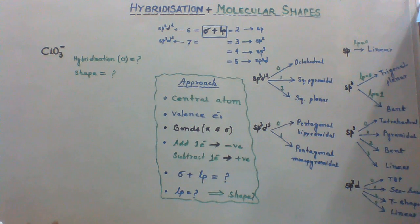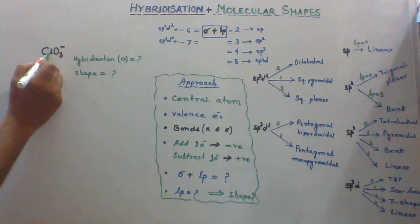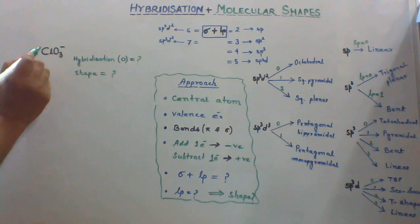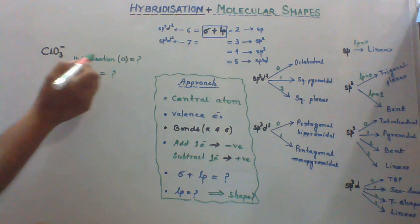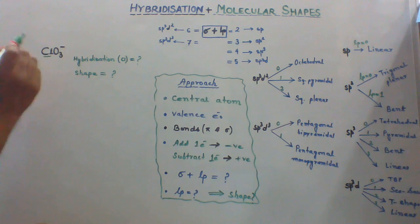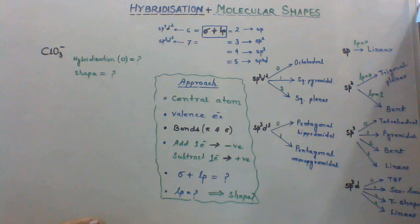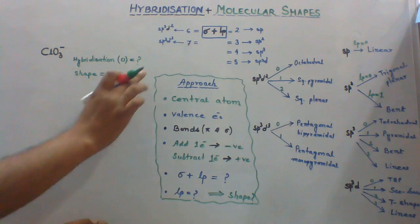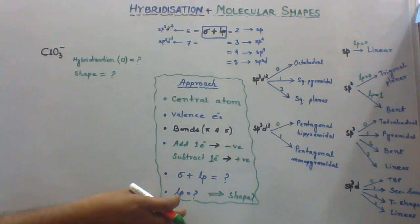Suppose you are given this species ClO3 minus. You have been asked to find out hybridization of chlorine here and the shape of this species. In order to solve this problem in very short time, this approach should be followed.